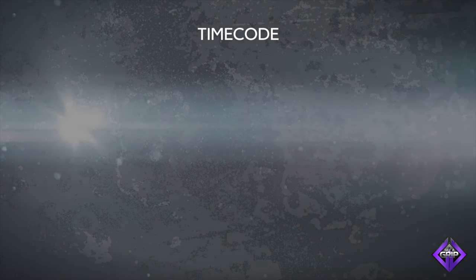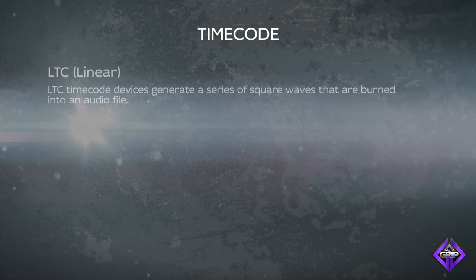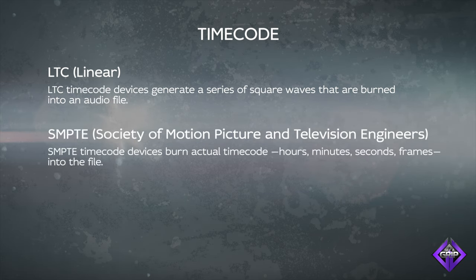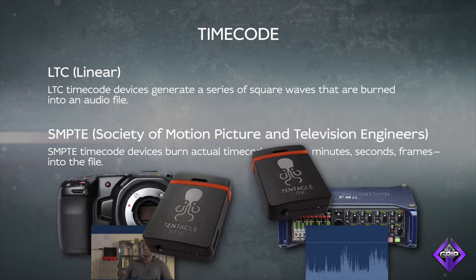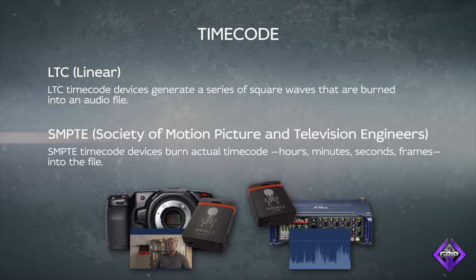If you use timecode to sync all of your cameras and sound recorder during production, most of the work is done even before you import your media. There are two main forms of timecode used to sync devices. LTC timecode devices generate a series of square waves that are burned into an audio track. SMPTE timecode devices burn actual timecode into each device. In both cases, every camera and sound recorder with an attached timecode unit will receive an identical signal that is used to sync them together in post.